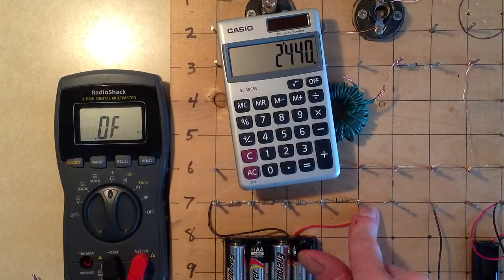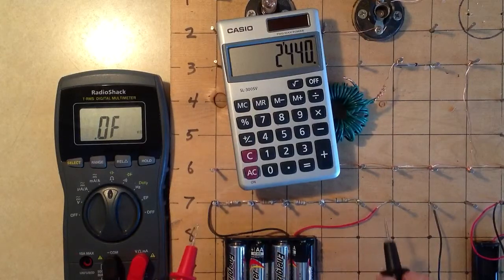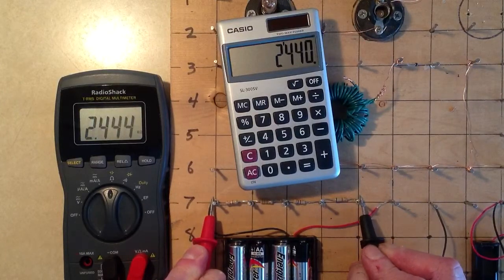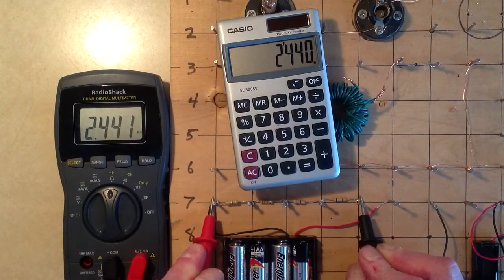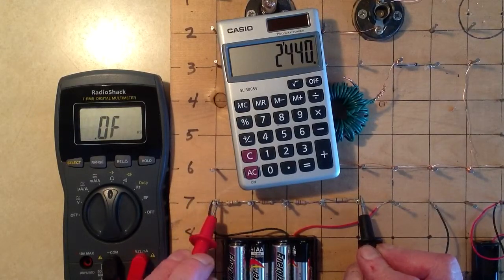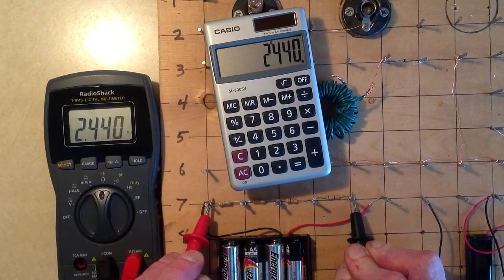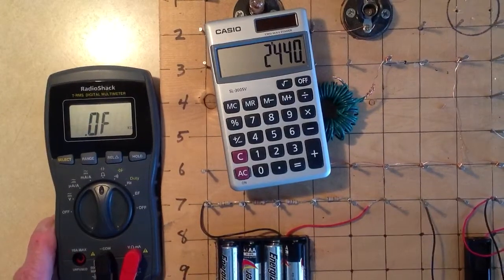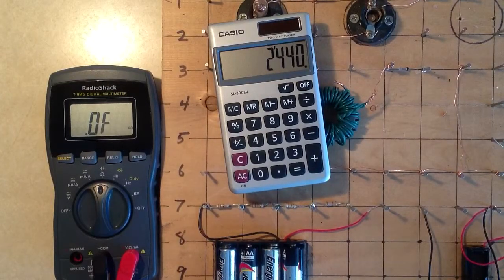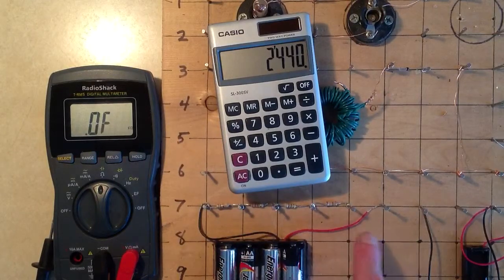That should be what we get when we measure the resistances of these four components as they are connected in series. So, let's just do that. 2.441 kilohms. 2.440. There you go. Just had to press down kind of hard there for a bit. Exact. Right down to the ohm. Precisely the same result as we got.